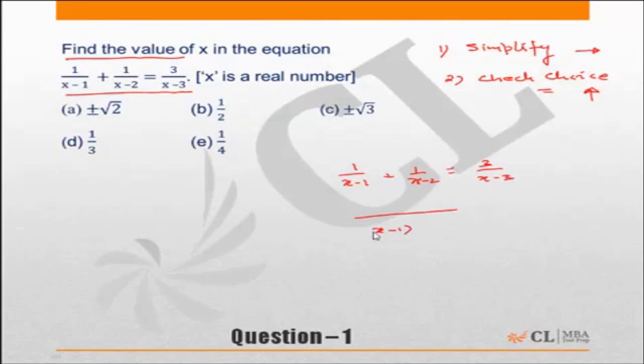So the denominator is x minus 1 into x minus 2, and the numerator will become x minus 2 plus x minus 1. This is equal to 3 upon x minus 3. Let us cross multiply also. Now the numerator out here is 2x minus 3.